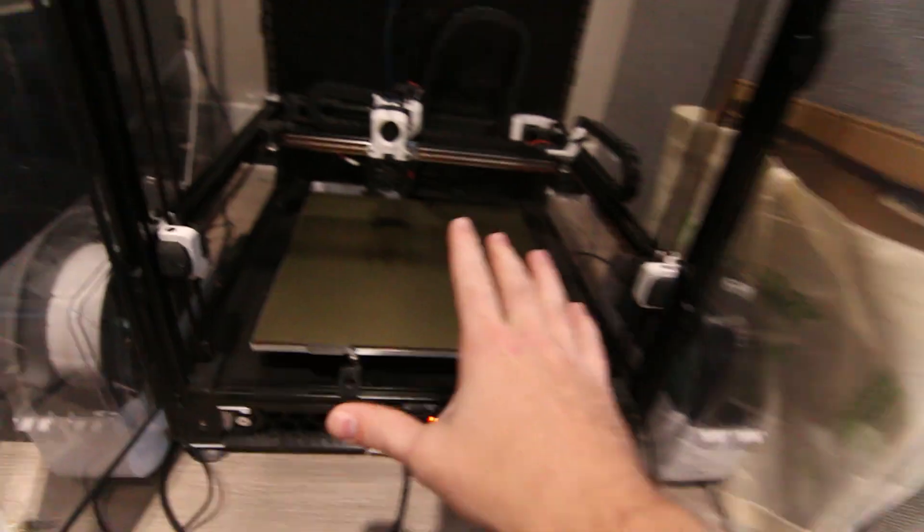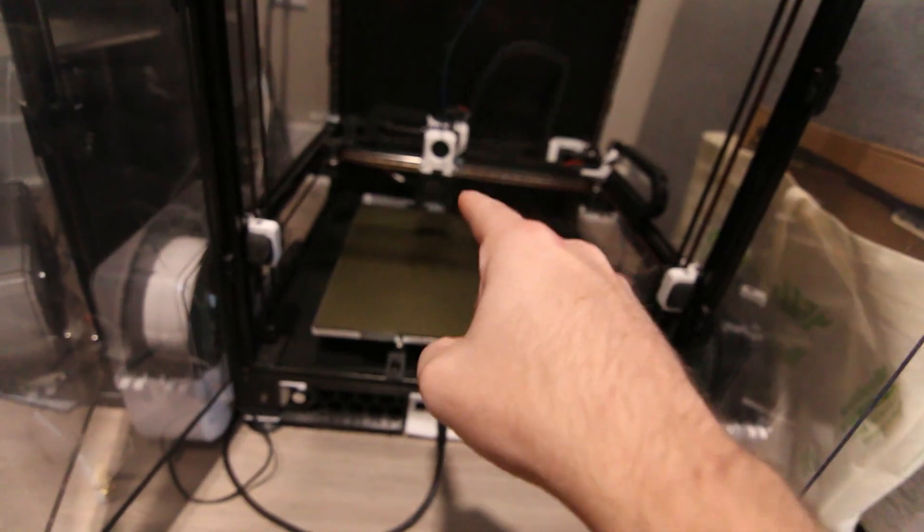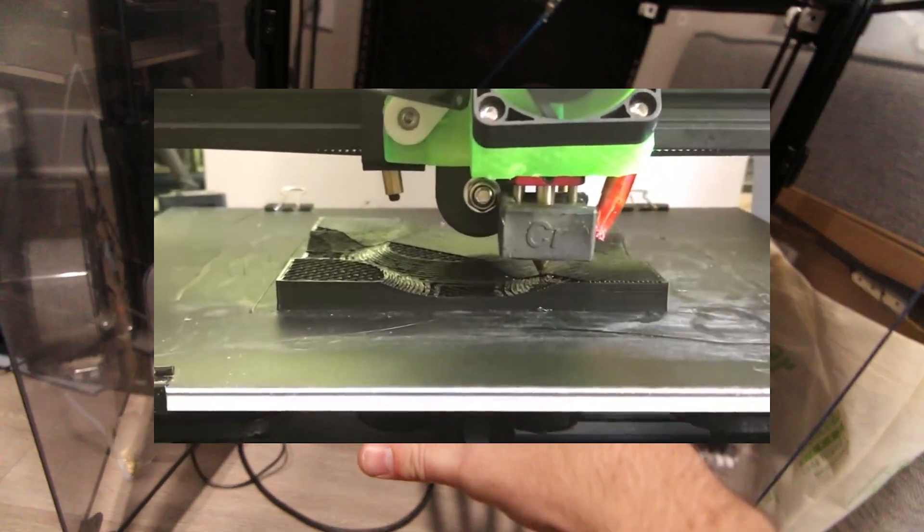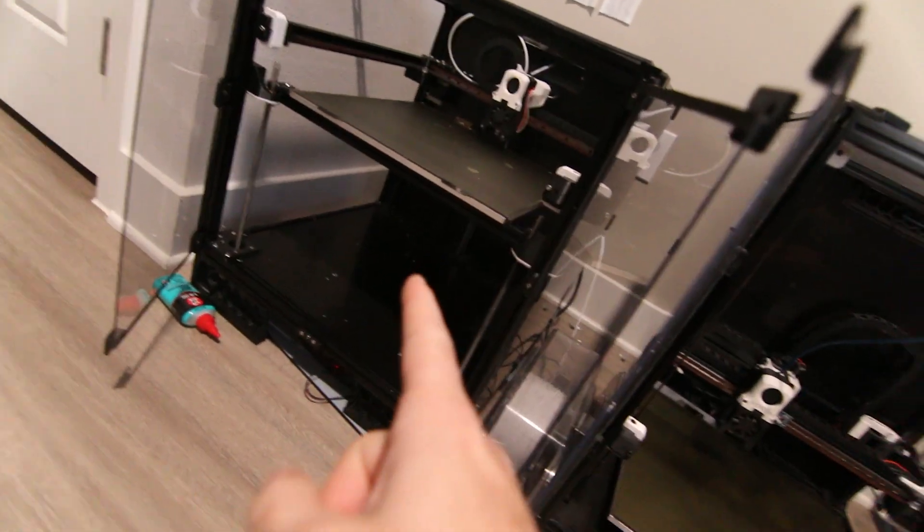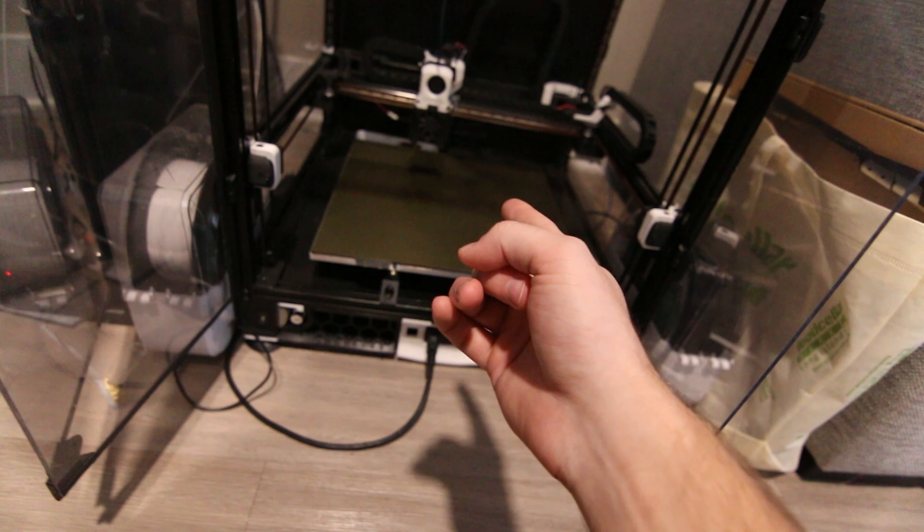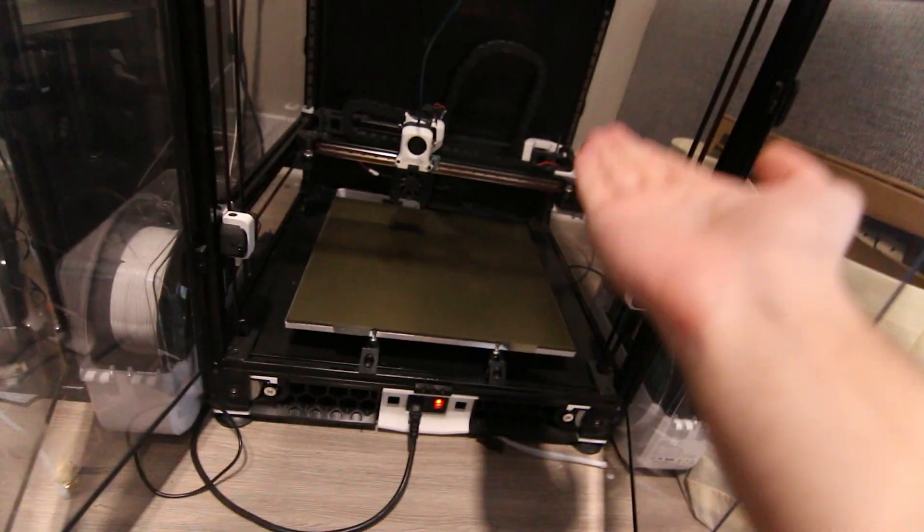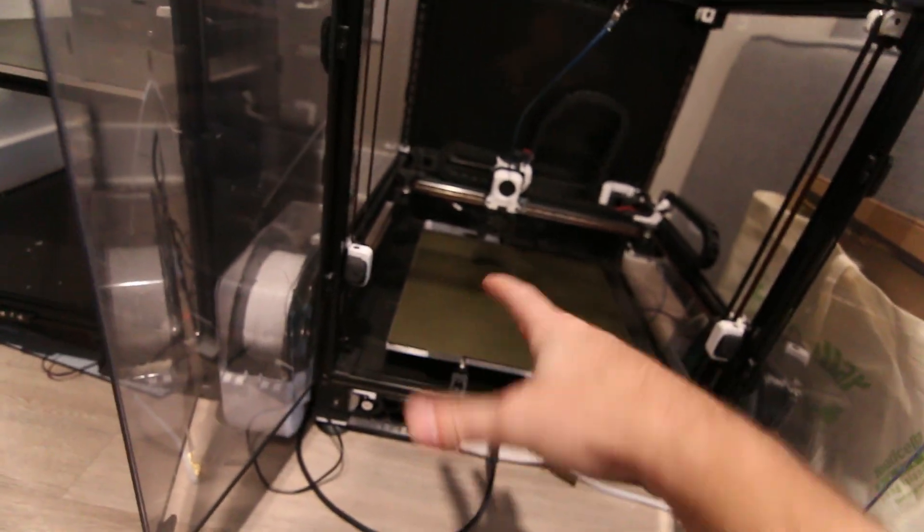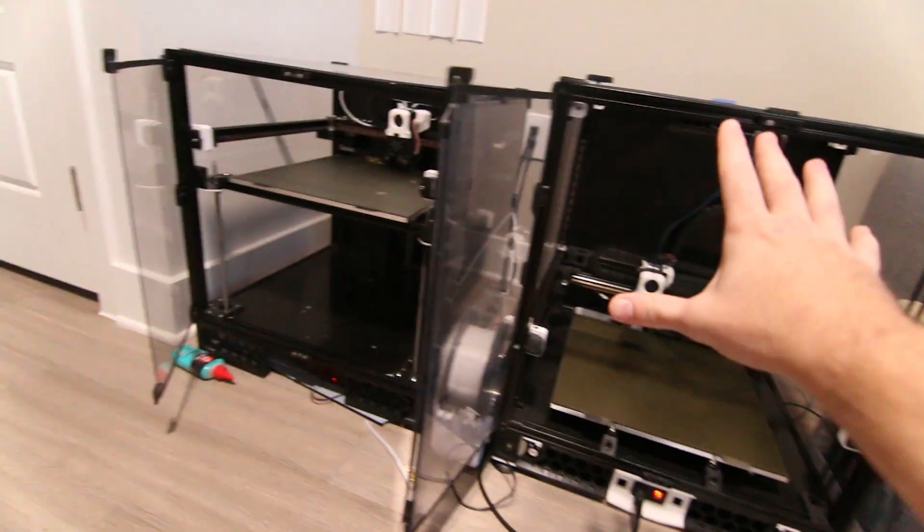The Voron 2.4 has the ability to do non-planar slicing in a weird way that the Trident in theory could do, but I feel like it just makes a lot more sense on the 2.4 with the way that the gantry can off-level itself very accurately in 3D space to give you some kind of non-planar slicing. But that being said, the Trident itself is way less complicated to build.